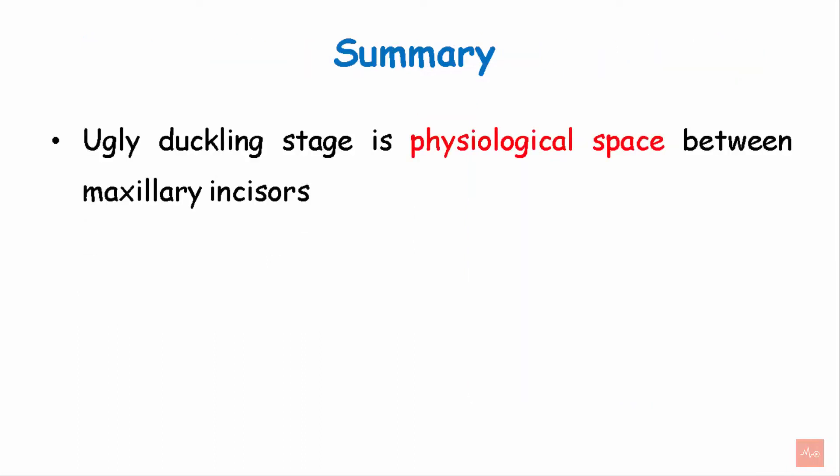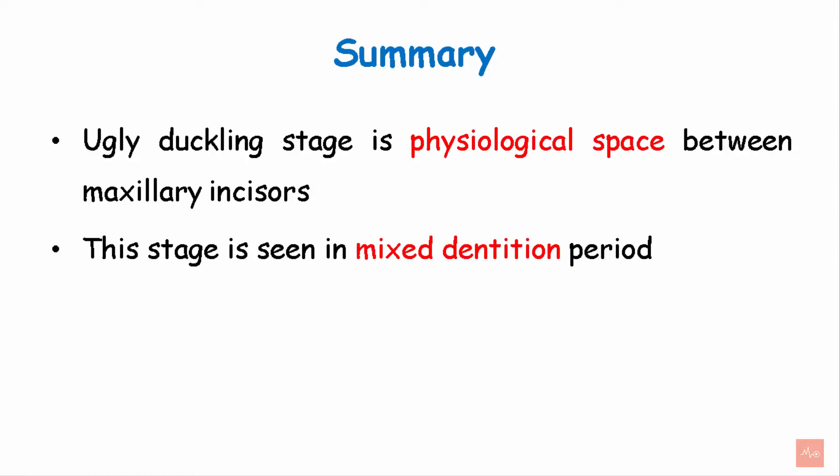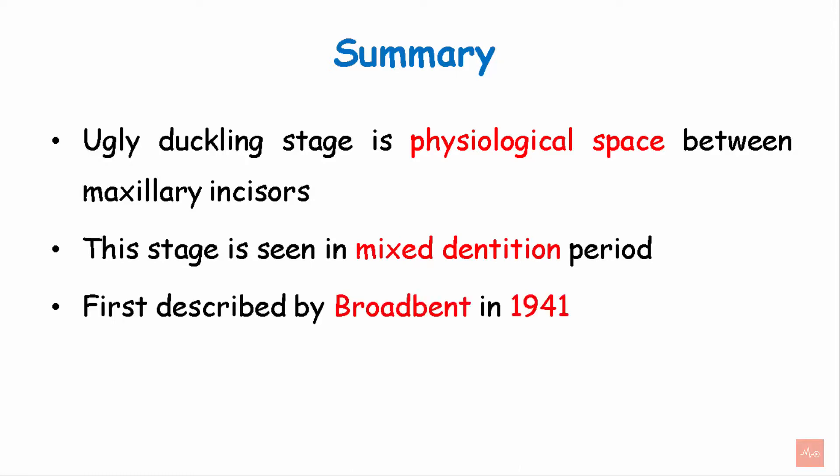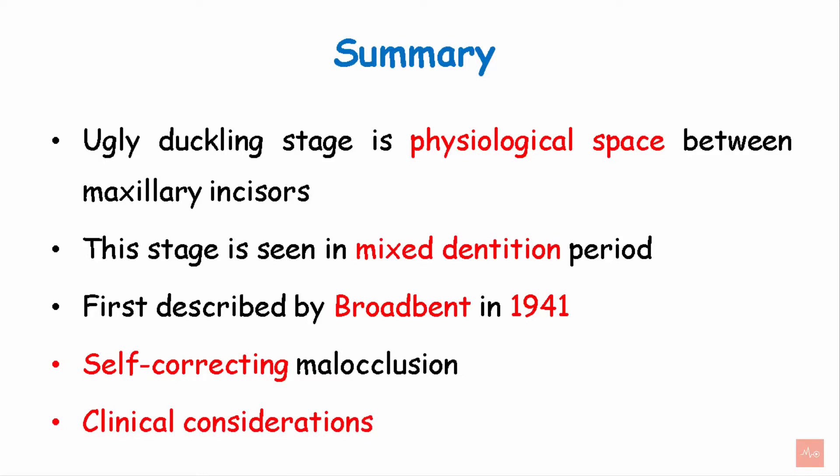To summarise: the Ugly Duckling Stage is a physiological space between the maxillary incisors, also called midline diastema. This stage is seen in the mixed dentition period. It was first described by Broadbent in 1941. It is also called self-correcting malocclusion. And we have seen the clinical considerations for the Ugly Duckling Stage.